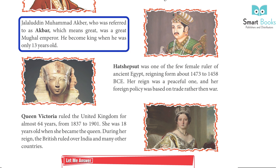2. Jalaluddin Muhammad Akbar, who was referred to as Akbar, which means 'great,' was a great Mughal emperor. He became king when he was only 13 years old.